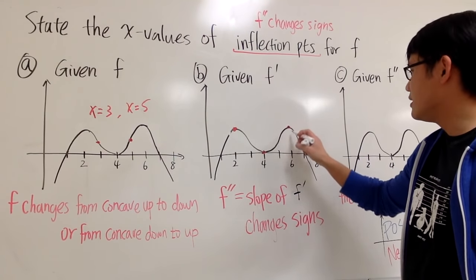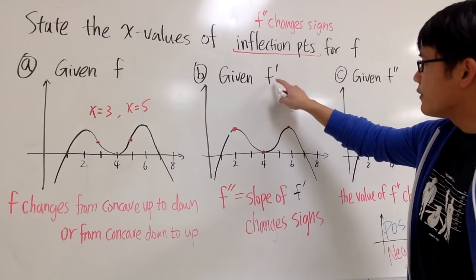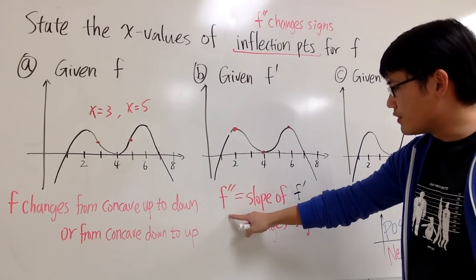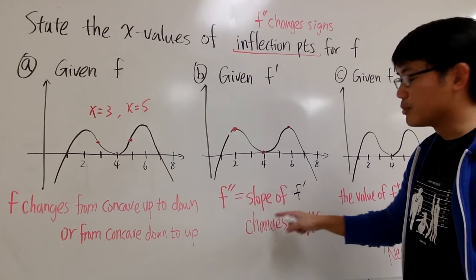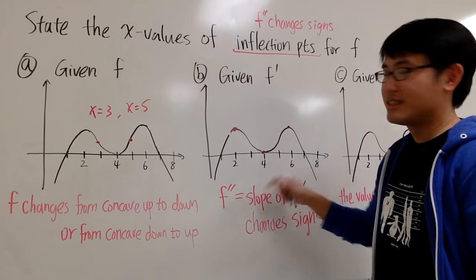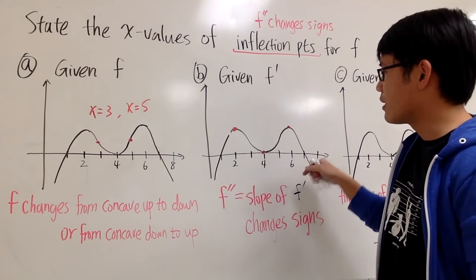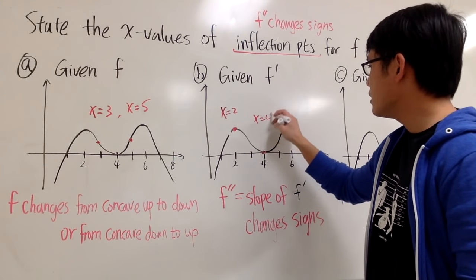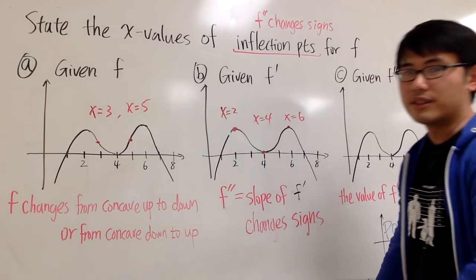Going up, then going down again. So if you are given the first derivative, the second derivative is the slope of the first derivative, and we have to find where the slope changes signs — pretty much the local mins and maxes. So the answers for Situation 2 are x is equal to 2, x is equal to 4, and x is equal to 6.